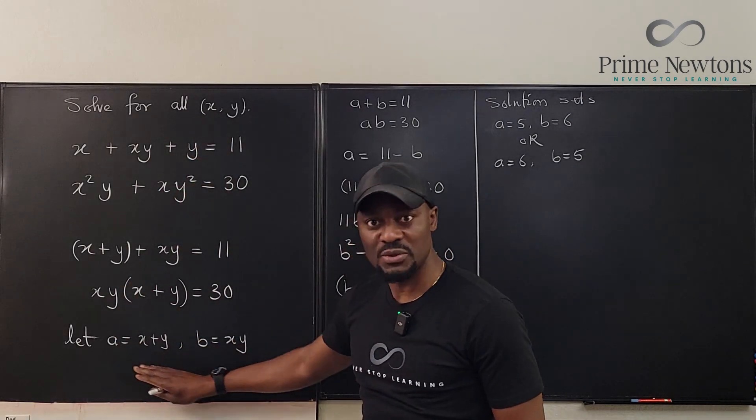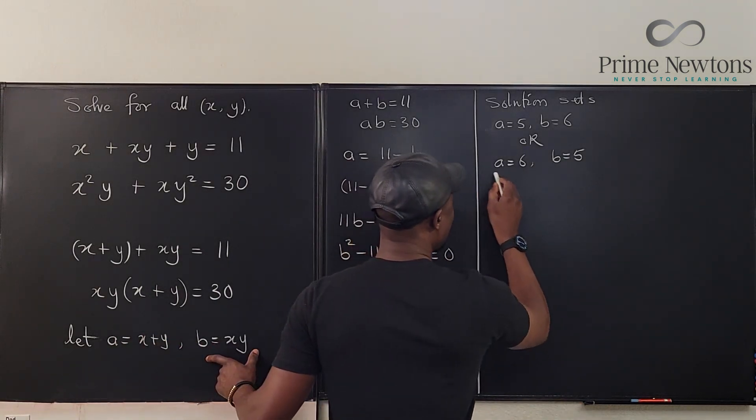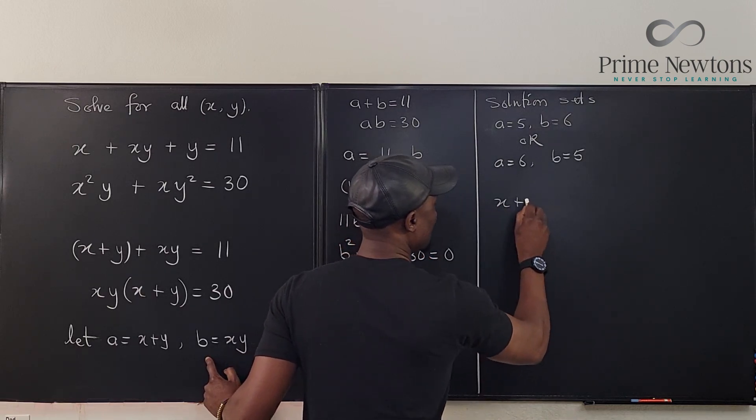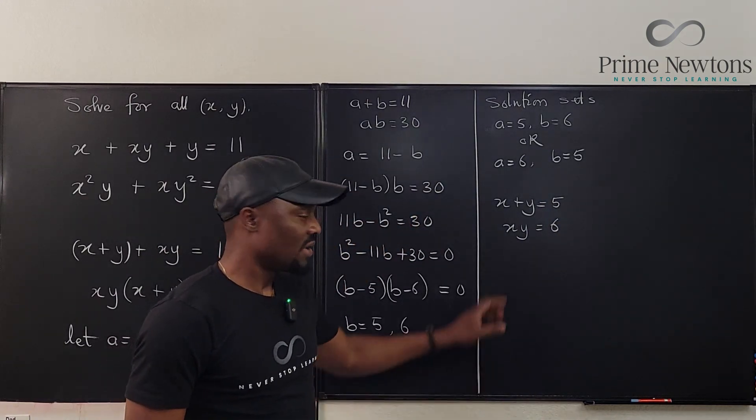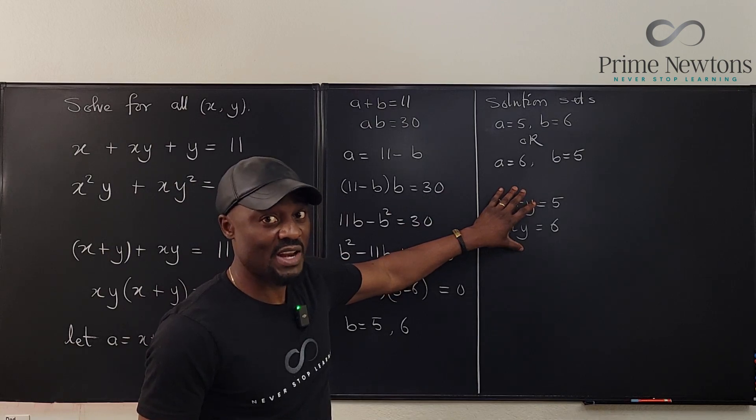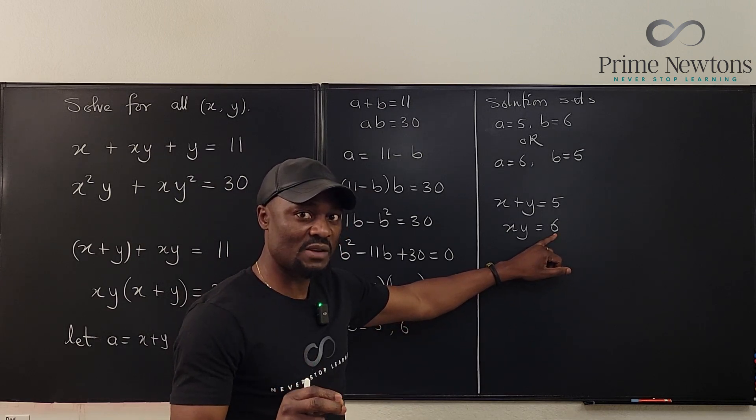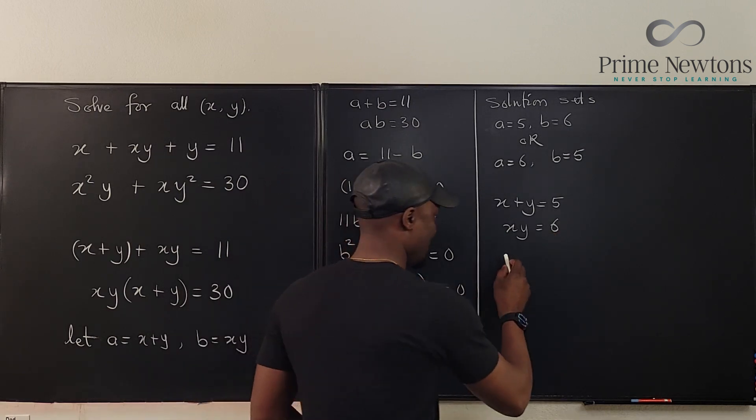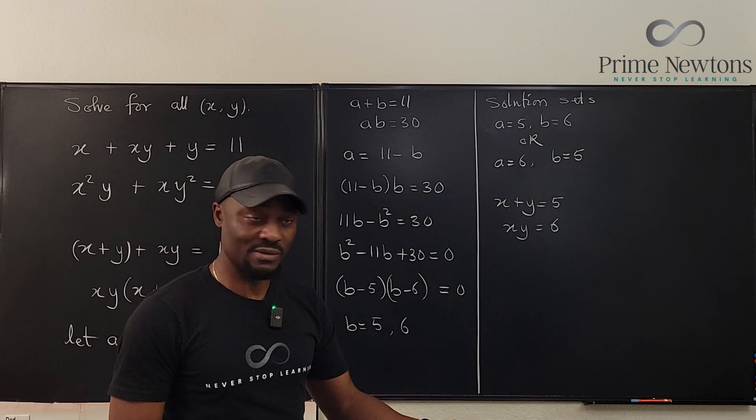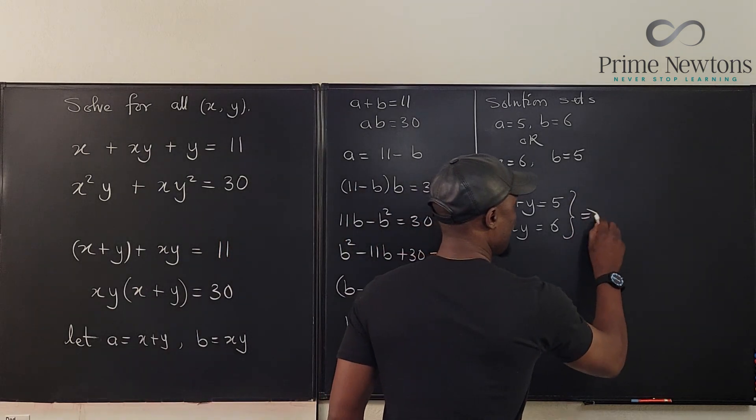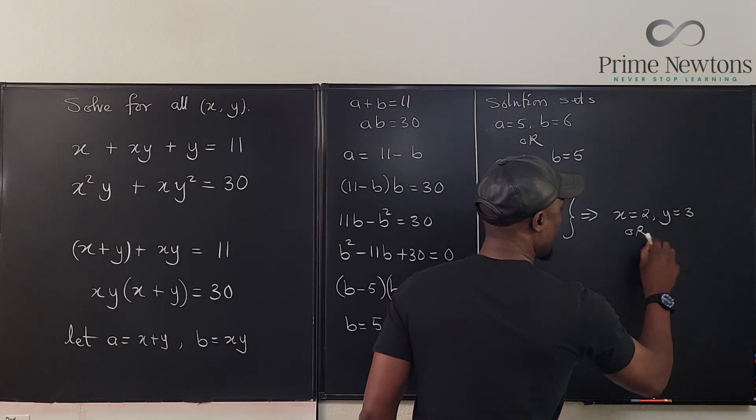So we go back to the original substitution we did. When this is 5 and this is 6, we have x plus y equals 5 and xy equals 6. The same thing that happened here. Now in this case I'm not going to solve a quadratic, you already see that it's just the whole factoring thing. What two numbers multiply to get six but when you add them you get five? Well, they're two and three. So that means x equals 2 and y equals 3, or you can switch it, x equals 3 and y equals 2.